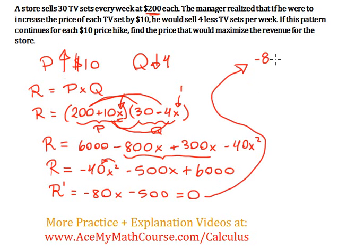So we have negative 80x minus 500 equals 0. And why do we do this again? Why do we set the derivative equal to 0? Because if we have a revenue function, the maximum value, which is what we want, we want to maximize the revenue, the slope at the maximum is 0. And the slope can be found through the derivative, so we set the derivative equal to 0. So let's solve for x.